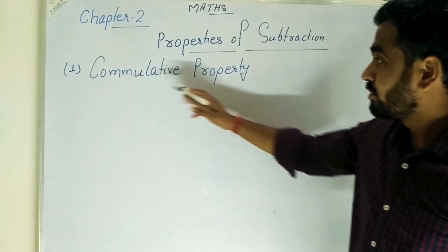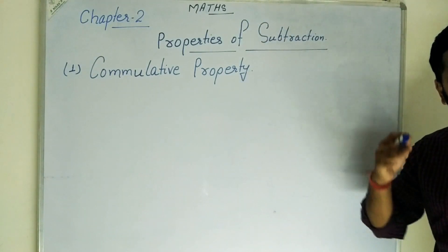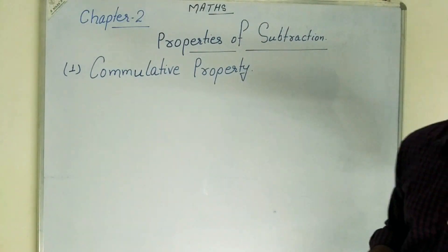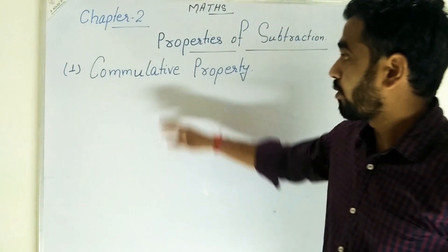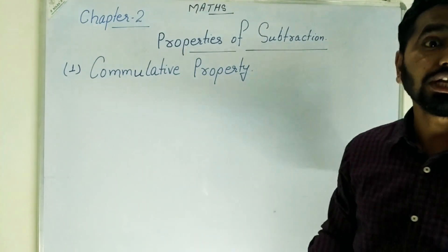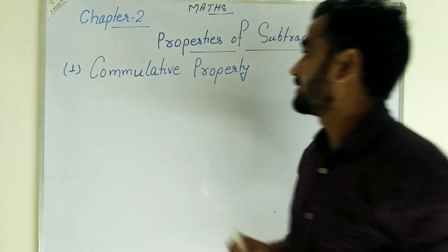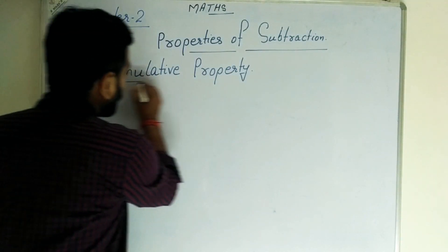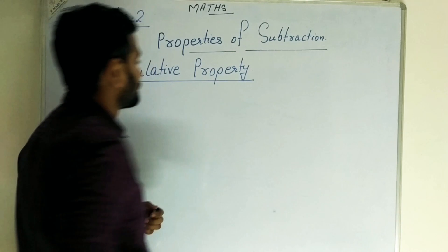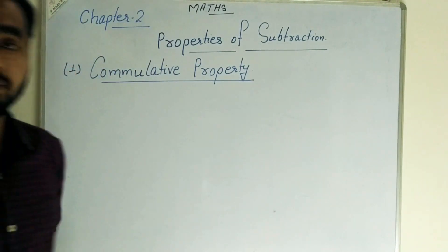The first one is the commutative property. Just like we studied commutative property in addition, we will look at it with an example. What do you mean by commutative property?